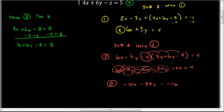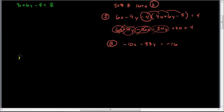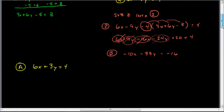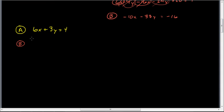Now that I've gotten it down to two equations with two unknowns — A and B — I'm going to rewrite those. Equation A: 6x plus 3y equals 4. Equation B: negative 10x minus 33y equals negative 16. I need to use substitution again. If I divide through by 3 to solve for y in A, I get a fraction — 4 thirds — and I'd rather avoid fractions. Notice that equation B has a negative 33y term.